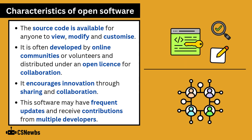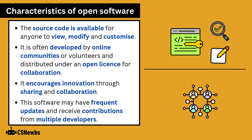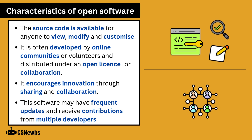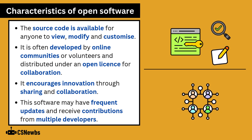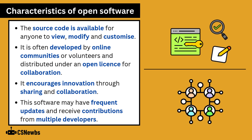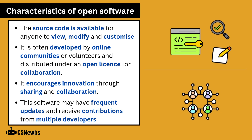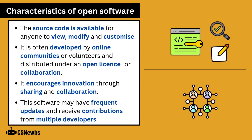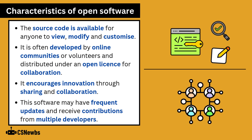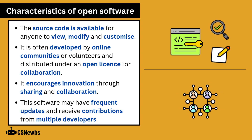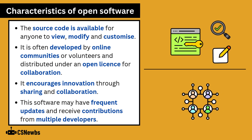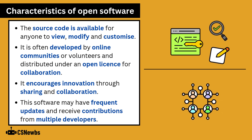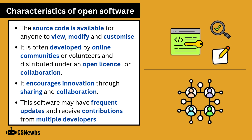Characteristics of open software include that the source code is available for anyone to view, modify, and customize. It's often developed by online communities or volunteers and distributed under an open license for collaboration. It encourages innovation through sharing and collaboration, and the software may have frequent updates and receive contributions from multiple developers online.